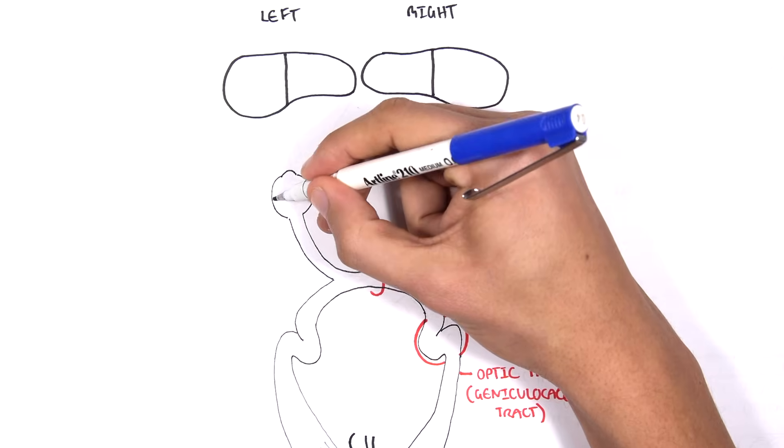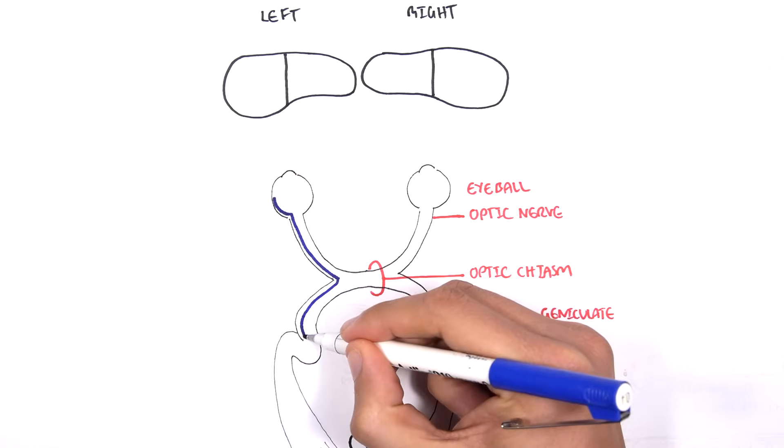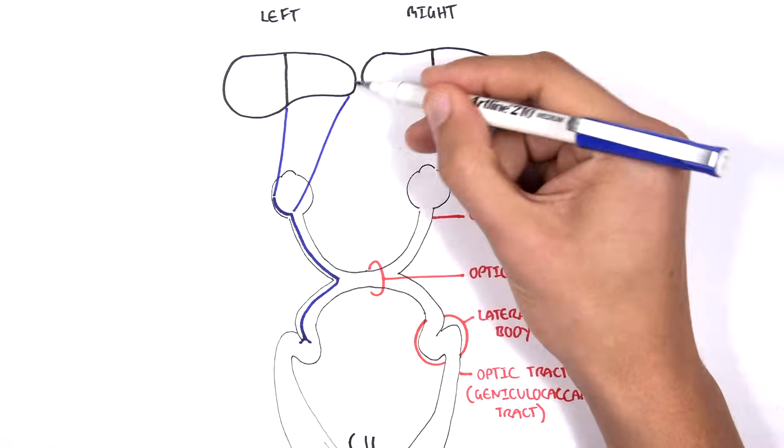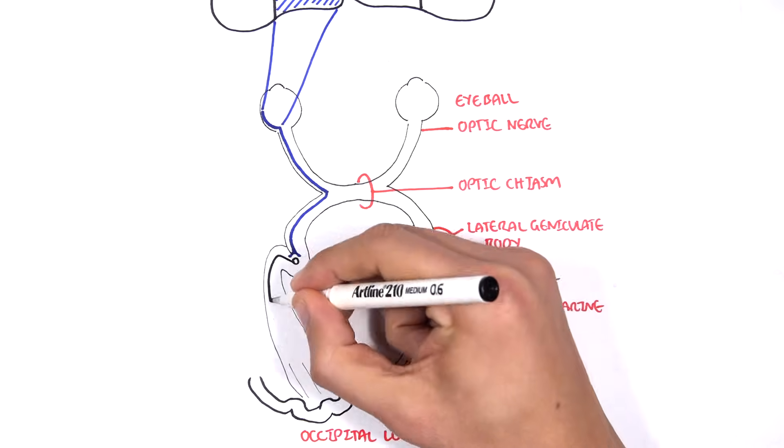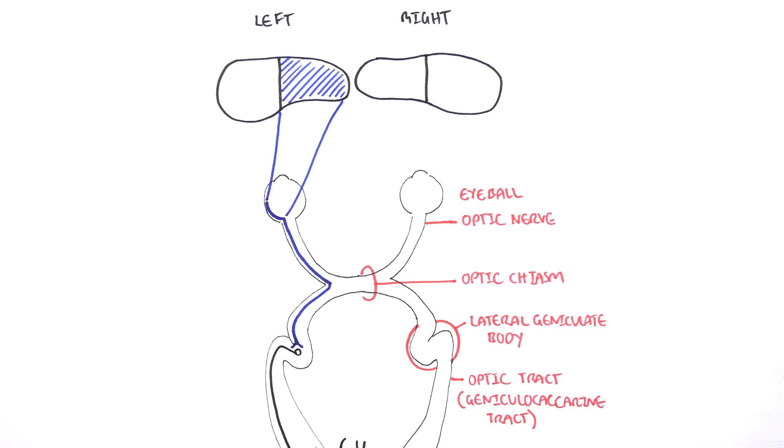So the blue nerve on the left side here will pick up the left nasal field and will carry this visual information to the lateral geniculate body where it will synapse with another nerve and this will carry this information to the occipital lobe.